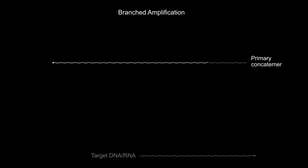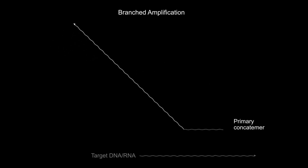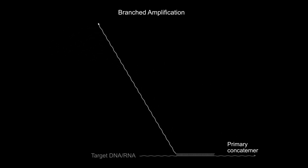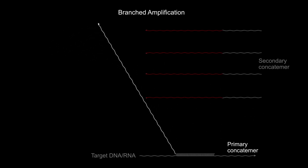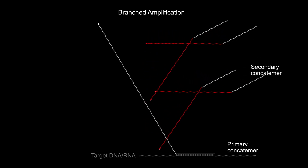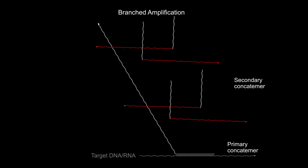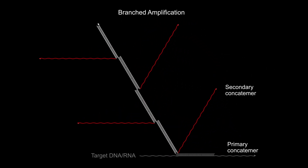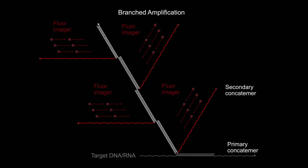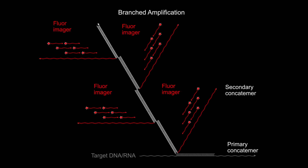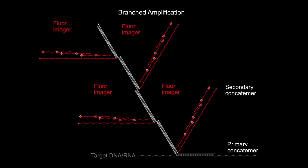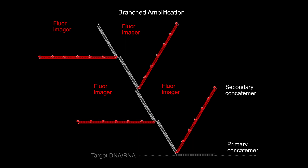This boosted fluorescent signal can be further amplified by synthesizing branched concatemers with secondary and higher-order branches that are initiated at the internal sites of already existing PER-concatemers. Once attached to DNA or RNA target molecules, these can incorporate a significantly higher number of fluorescent imagers and provide greater sensitivities.